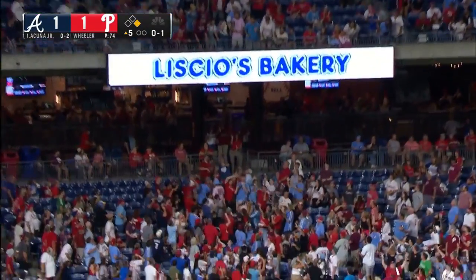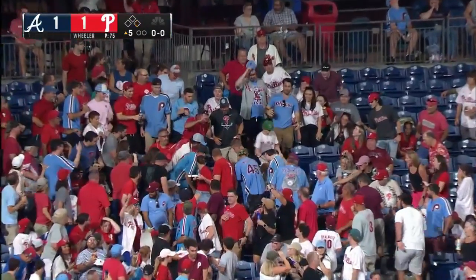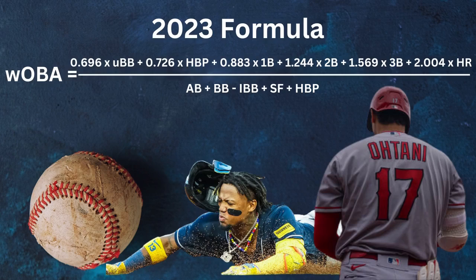The best example is comparing the 2023 season back to the dead ball era of 1911. In 2023, we see our coefficients are very similar to 2013: 0.696 for unintentional walks, 0.726 for hit-by-pitch, 0.883 for singles, 1.244 for doubles, 1.569 for triples, and 2.004 for home runs. There is a difference between the 2013 and 2023 calculation.